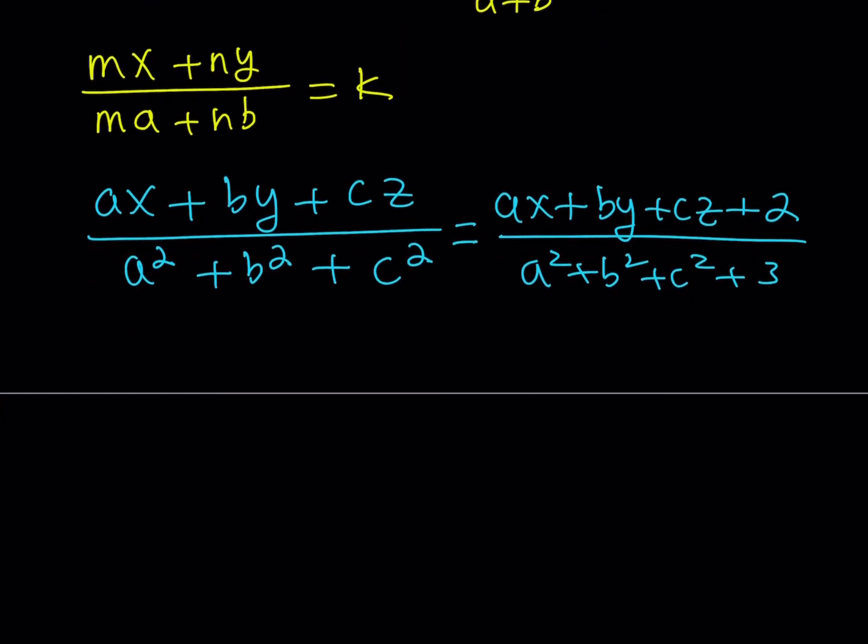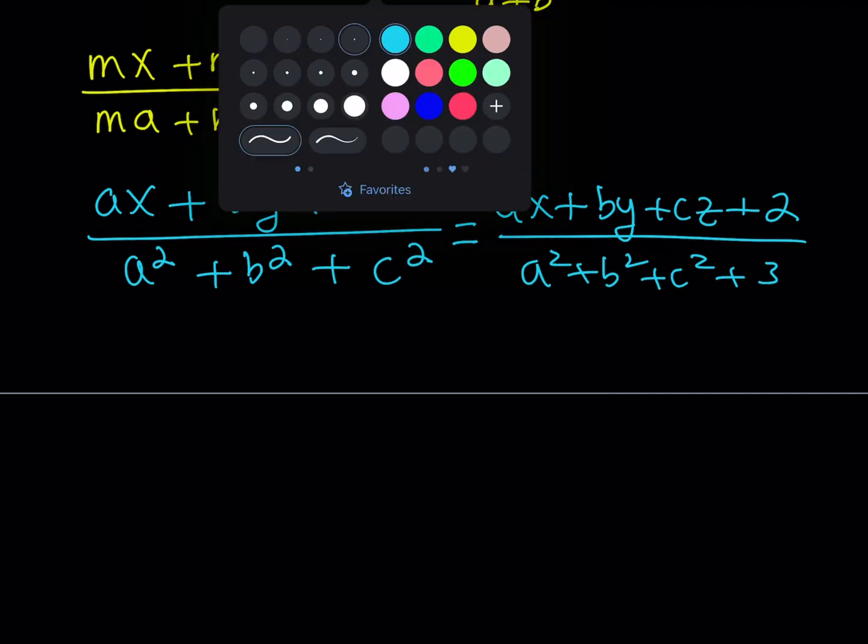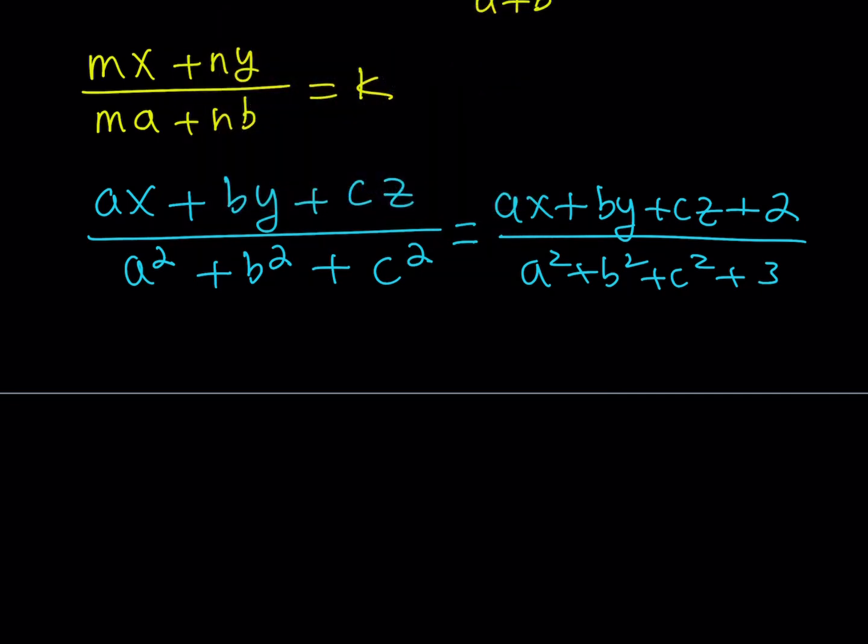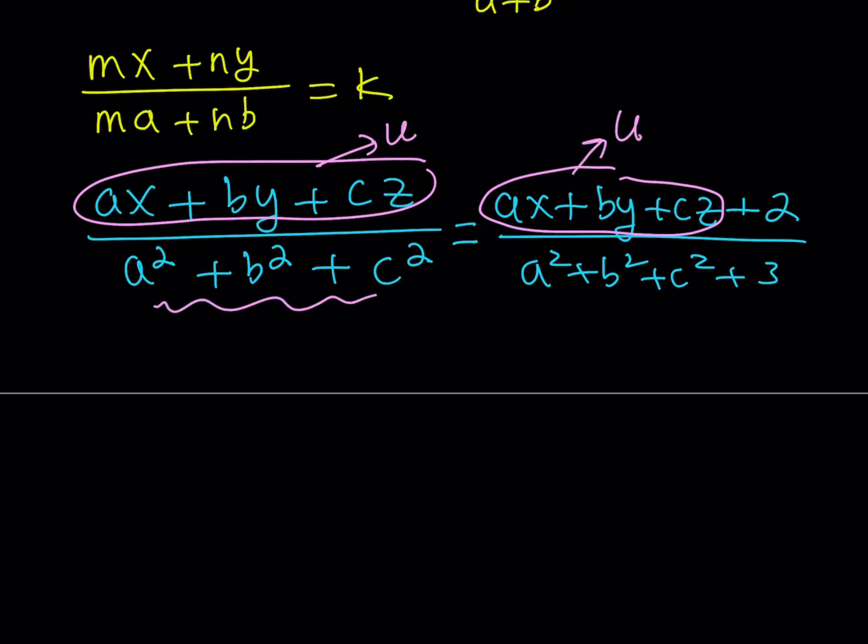Now, what do you notice about this equation? Obviously, you don't want to just cross multiply and distribute everything, because certain things are being repeated here. I do see ax plus by plus cz here and the same thing here. So this means I can use substitution. Let's call this u and call this v.